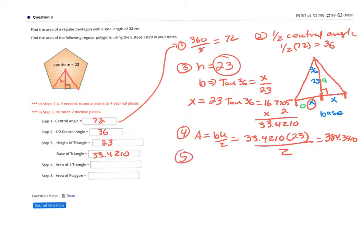And then the last step is to multiply 5, because there's 5 sides or 5 triangles, times the area of one triangle, 384.3410. And when you do that, you get 1921.7.